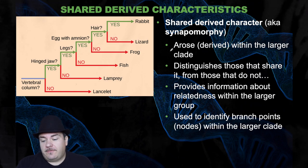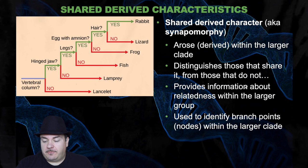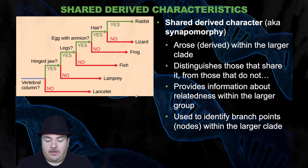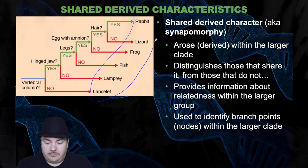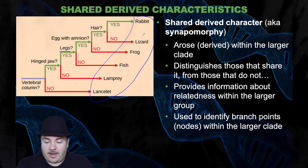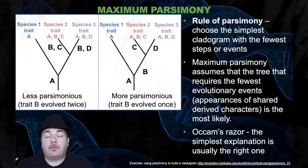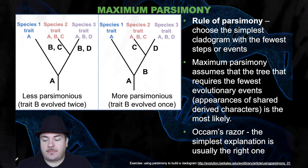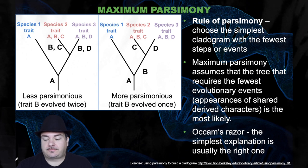You can also have shared derived characters. These arose within the larger clade, distinguishing those that share it from those that do not, and provide information about relatedness within the larger group. They are used to identify branch points or nodes within the larger clade. For example, legs are not a shared ancestral character for all vertebrates, but legs are a derived character for a specific subgroup within that larger group.